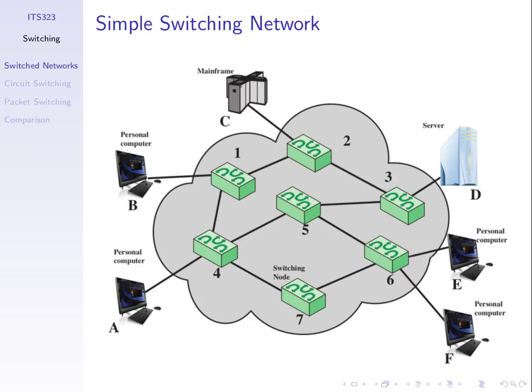Typically the stations will connect into a node via a point-to-point link, which is usually dedicated for that station. So A has a link into node 4, and that link is only for communications between A and node 4 — no one else uses that link. Only data coming from A, or data destined to A, traverses this link. Whereas the internal links between nodes sometimes use multiplexing — they carry data from multiple users across a single link.